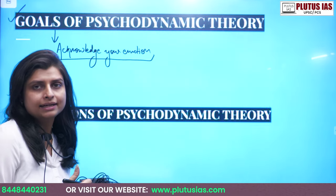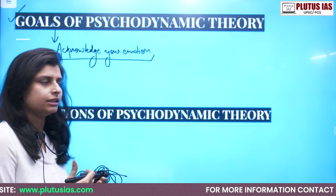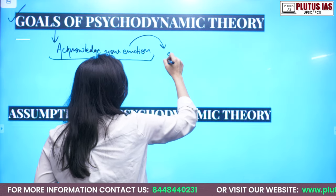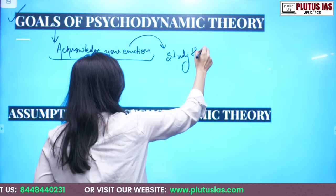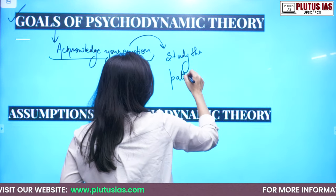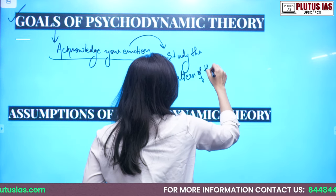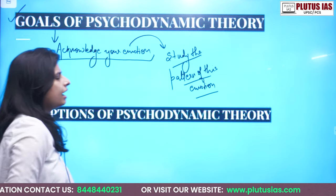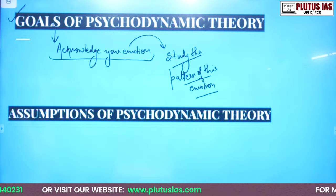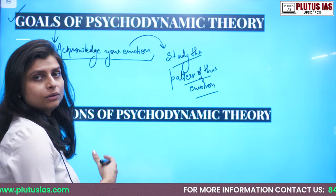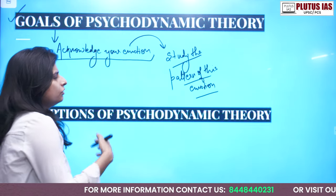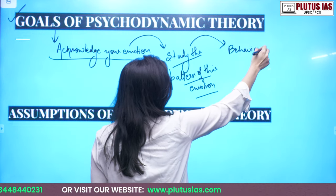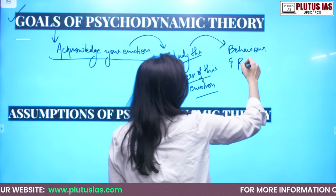For example, if we are sad, why did this emotion get generated? We need to acknowledge that emotion. Once we have acknowledged that emotion, we need to study the pattern of this emotion — how often we are going through this pattern or how often we are behaving in this manner. From here onwards, we will know why our behavior or our relationships are changing.